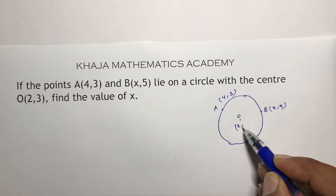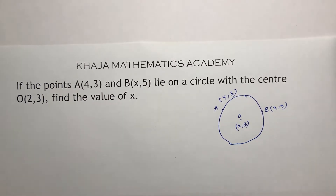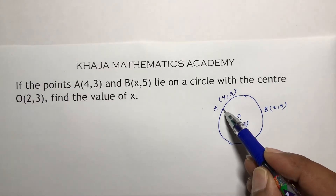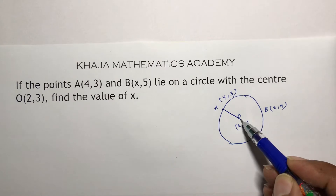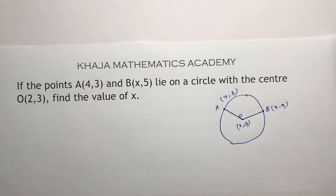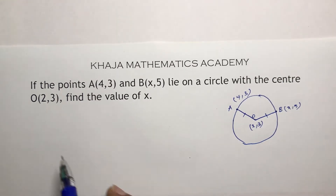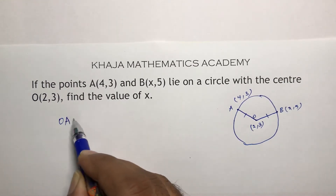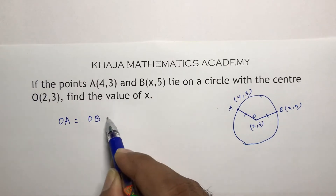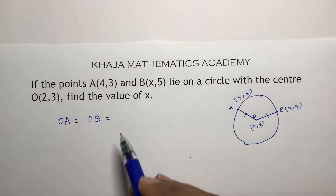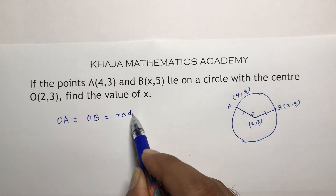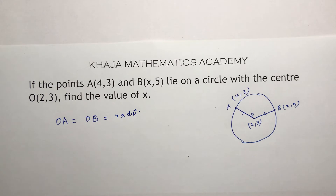We need to find the value of x. Since both points lie on the circle, OA distance will be equal to OB distance — because OA and OB are both radii of the circle. So OA equals OB equals the radius.